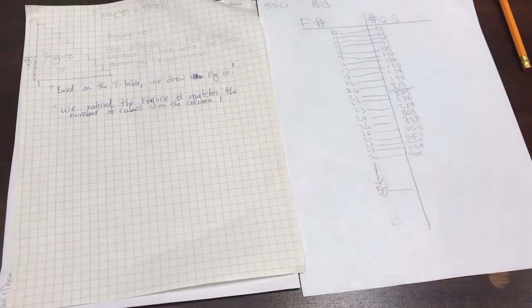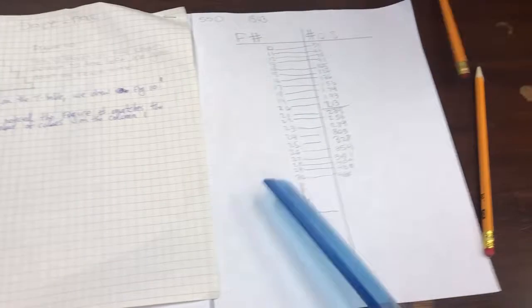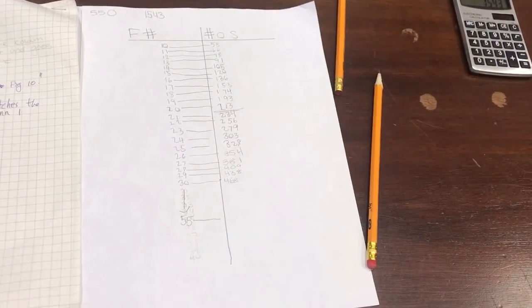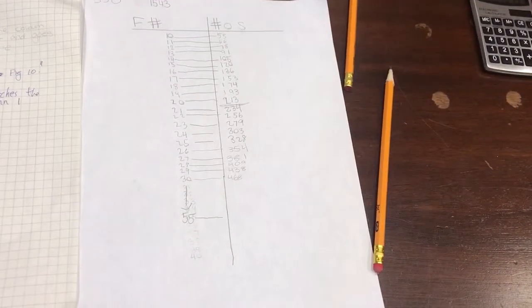So we just made the T table, and then when we got to 30, we didn't want to go up to 55, so we just used the calculator.